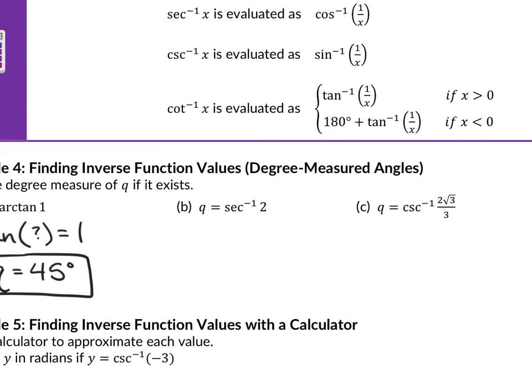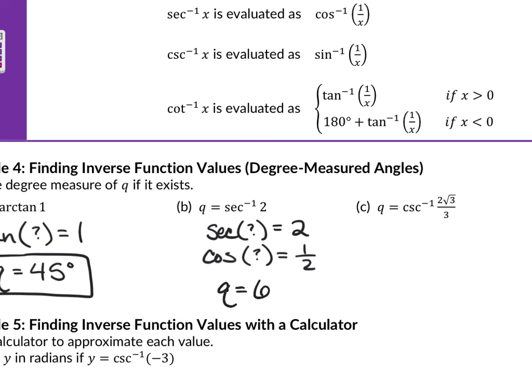For part B: inverse secant of 2. Secant is the reciprocal of cosine, so this is really asking what angle gives cosine a value of 1/2 — the reciprocal of 2. On your unit circle, cosine of 60° is 1/2, so the answer is 60°. When doing reciprocal inverse trig by hand, translate it back into sine, cosine, or tangent using the reciprocal identity — those are the values you have memorized.